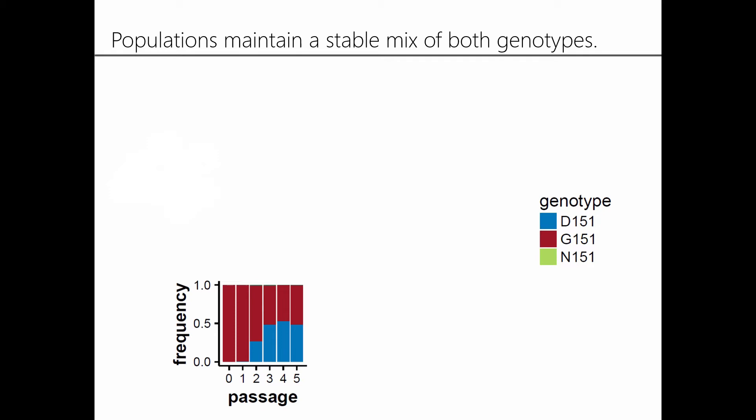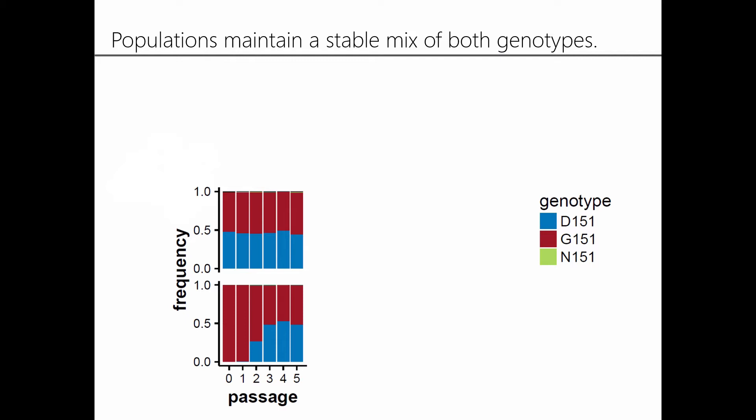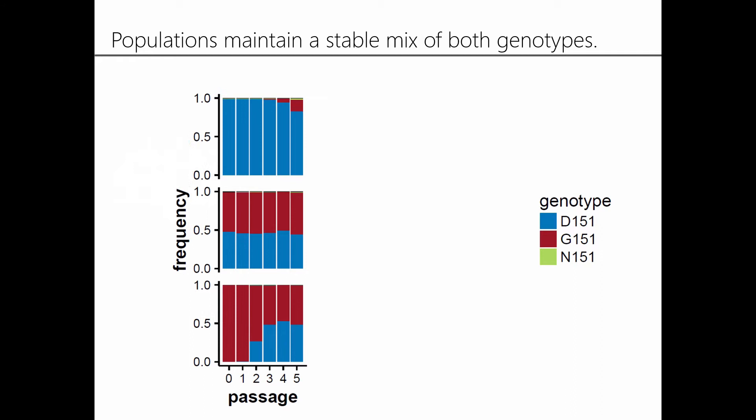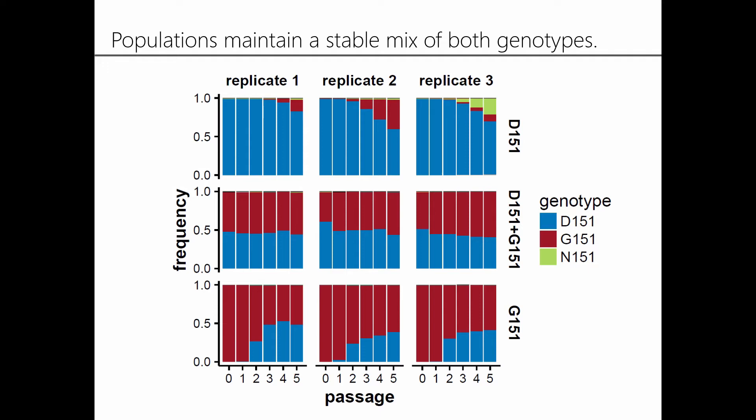To try to understand this better, we started by doing an evolution experiment in the lab. We started with a pure population of the mutant viral variant, and over several cell culture passages we see that the wild-type variant arises spontaneously and eventually increases to make up about half of the viral population. If we start at this 50-50 equilibrium, we see that this mixture is stably maintained throughout our entire experiment. Conversely, if we start with the wild-type variant, we also see the mutant variant arise spontaneously and begin to reach a substantial frequency. These results are extremely similar across three independent biological replicates, suggesting that both variants are really contributing to the overall fitness of the viral population.